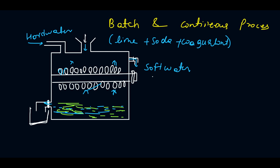This is the steel tank used in the batch process. After the soft water is removed, the steel tank is washed with distilled water for cleaning purposes. This completes the batch process.